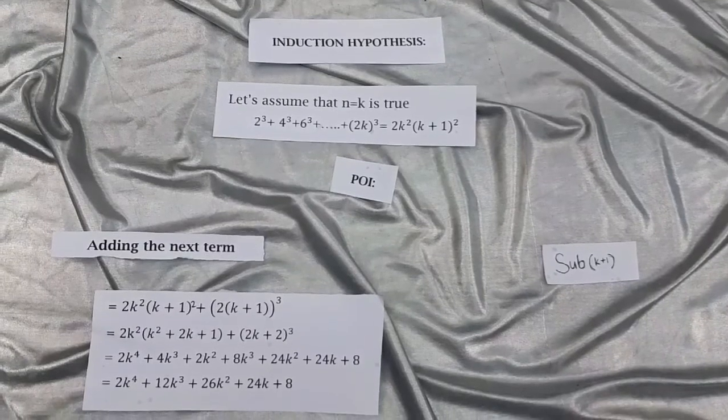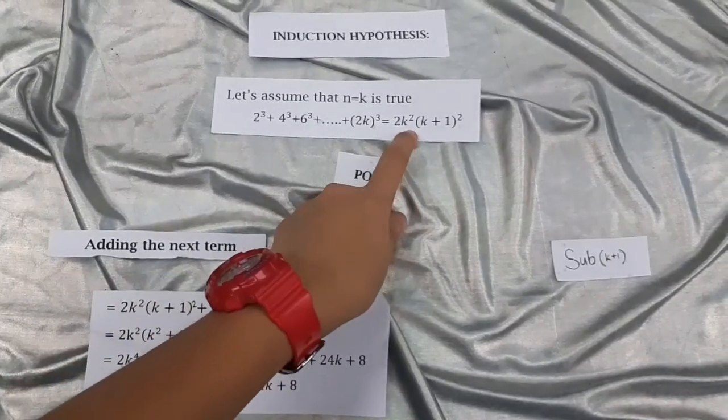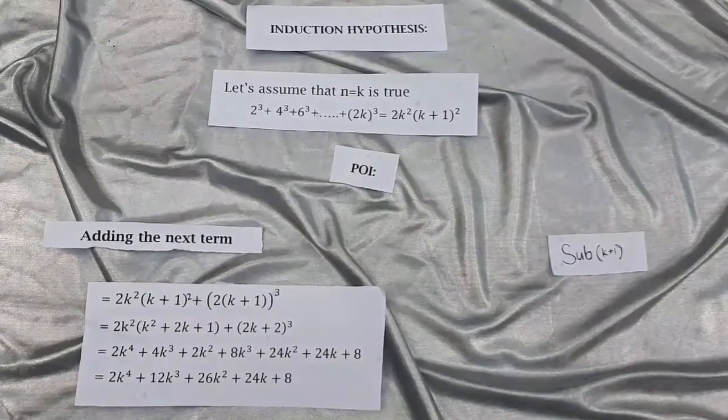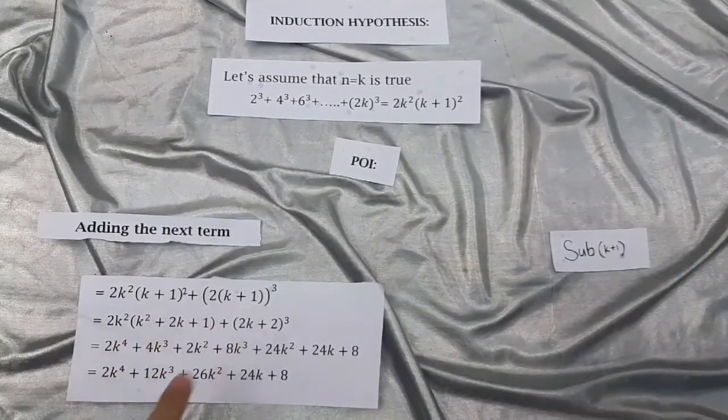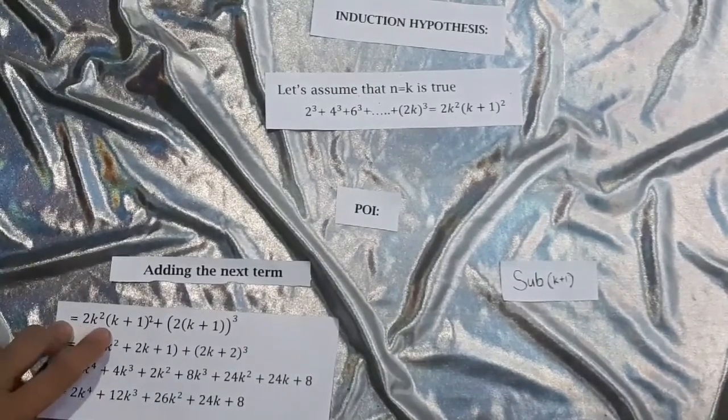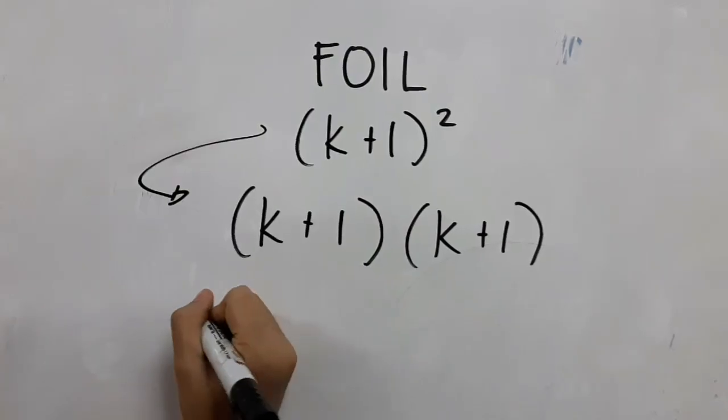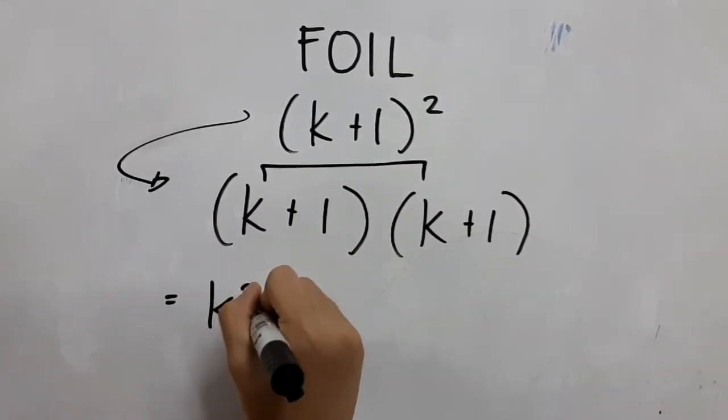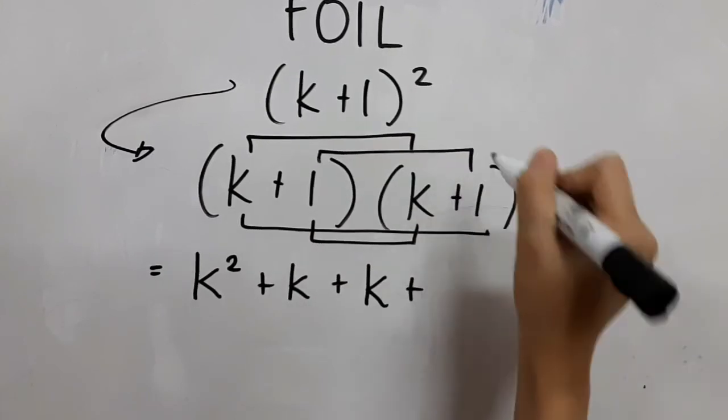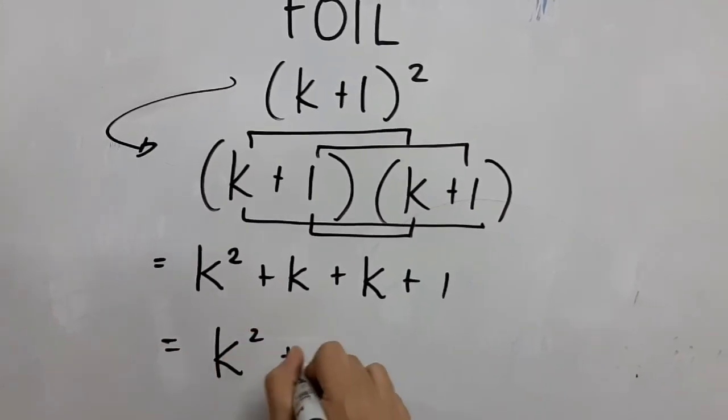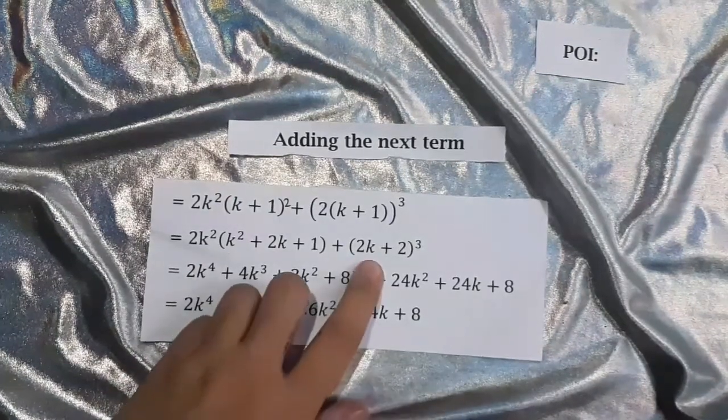We will first add the next term. We will prove the equation formed in the induction hypothesis, which is 2k²(k + 1)², and then add the next term of this series, which is (2k + 2)³. Then, we will perform and expand this. Since we cannot multiply 2k² with (k + 1)² directly, we will first perform this using the foil method.